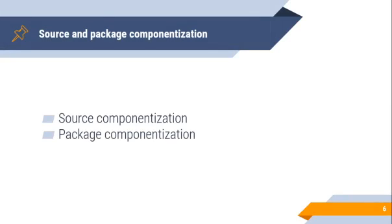Source and Package Componentization. Current development practice already has the notion of componentization. There are two ways of componentization commonly used. First, source componentization. This focuses on source code — it refers to splitting up the source code in the code base into separate parts and organizing it around the identified components. It works as long as the source code is not shared outside the process.